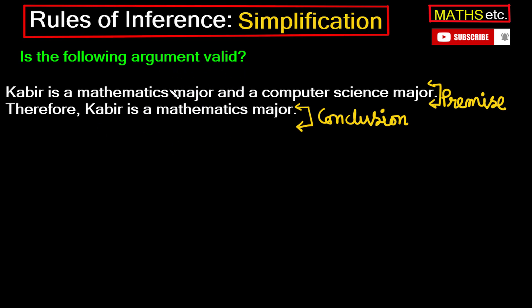Koi bhi argument valid hota hai jab bhi us ki jitni bhi premises hain, agar woh sari premises ek sath true hain, toh is case mein agar conclusion bhi true hai, toh aise argument ko hum kya bolte hain? Valid argument bolte hain.